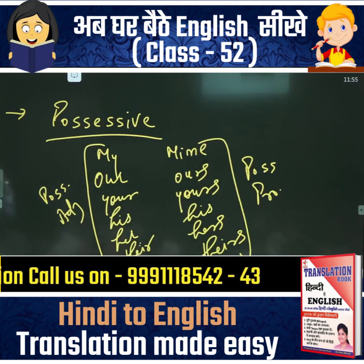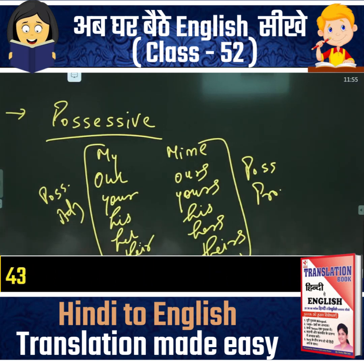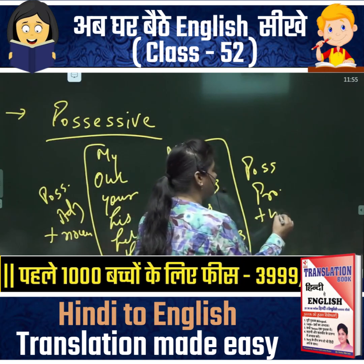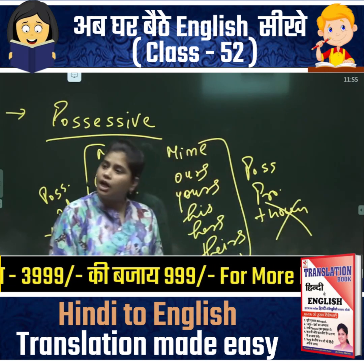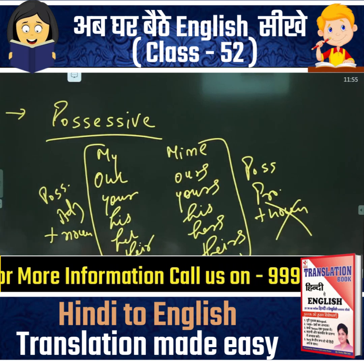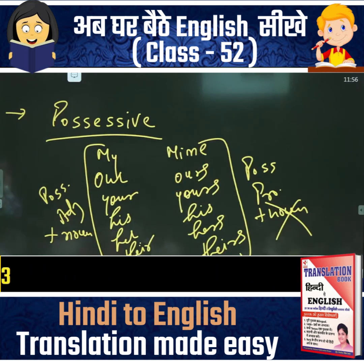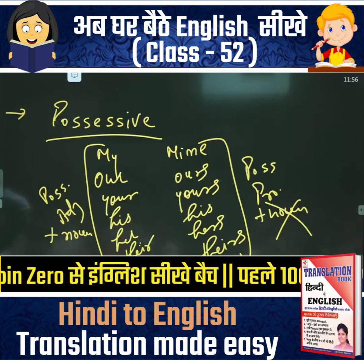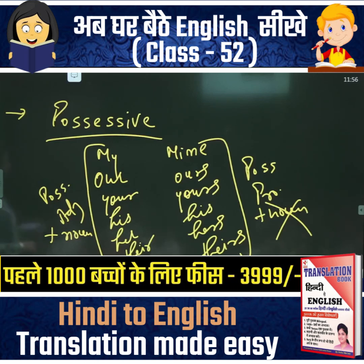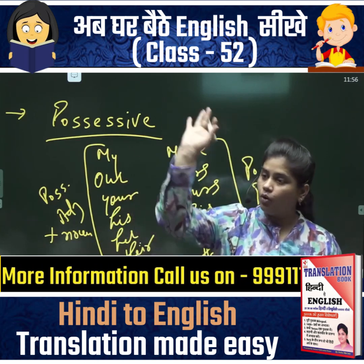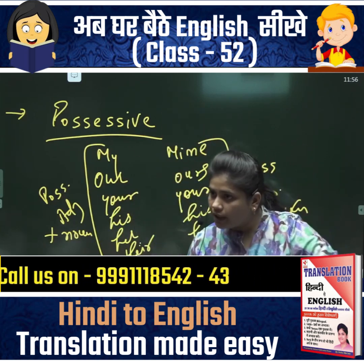Ab in dono mein fark kya hai ma'am? Answer kaisa banayega — logic kya hai? Kaan khol ke dhyan se sunna. Adjective English mein hamesha noun ke saath aata hai. Aur pronoun English mein kabhi bhi noun ke saath nahi aata, kyunki pronoun noun ki jagah pe aata hai. Toh paper mein bas yeh pehchanna hai: agar adjective aaya toh noun bhi aaya; agar pronoun aaya toh noun bilkul bhi nahi aaya.